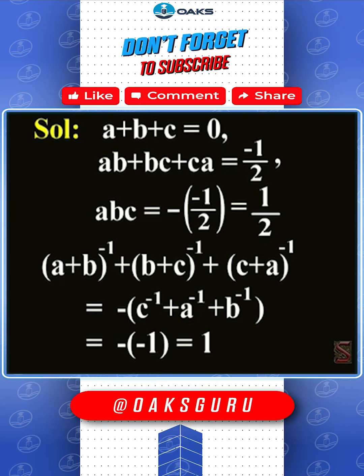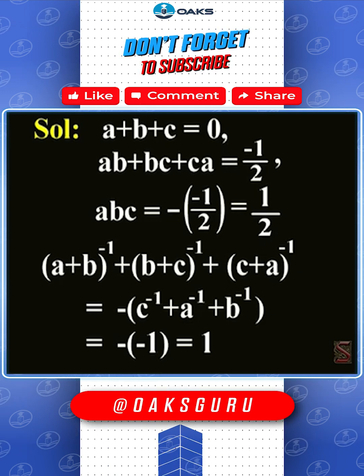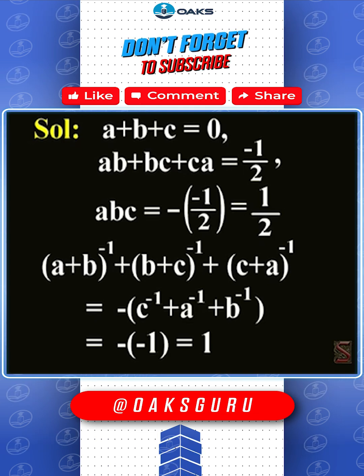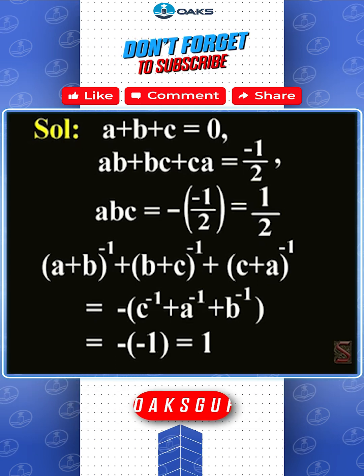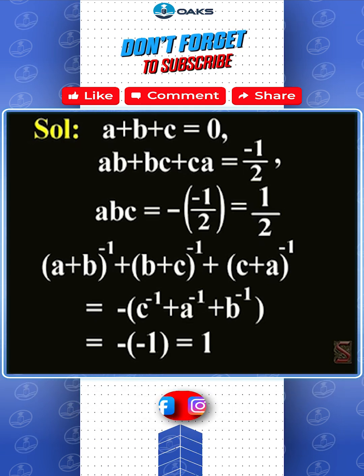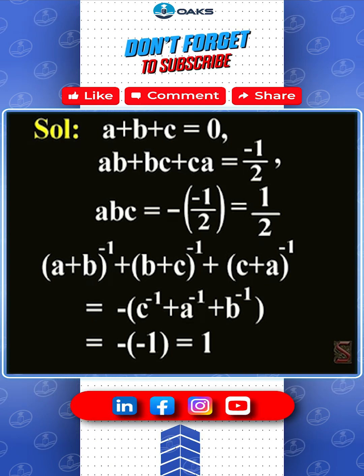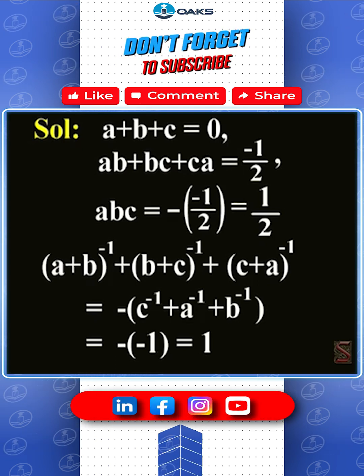Now, (a+b)⁻¹ + (b+c)⁻¹ + (c+a)⁻¹ equals (-1/2)⁻¹ which equals 1.